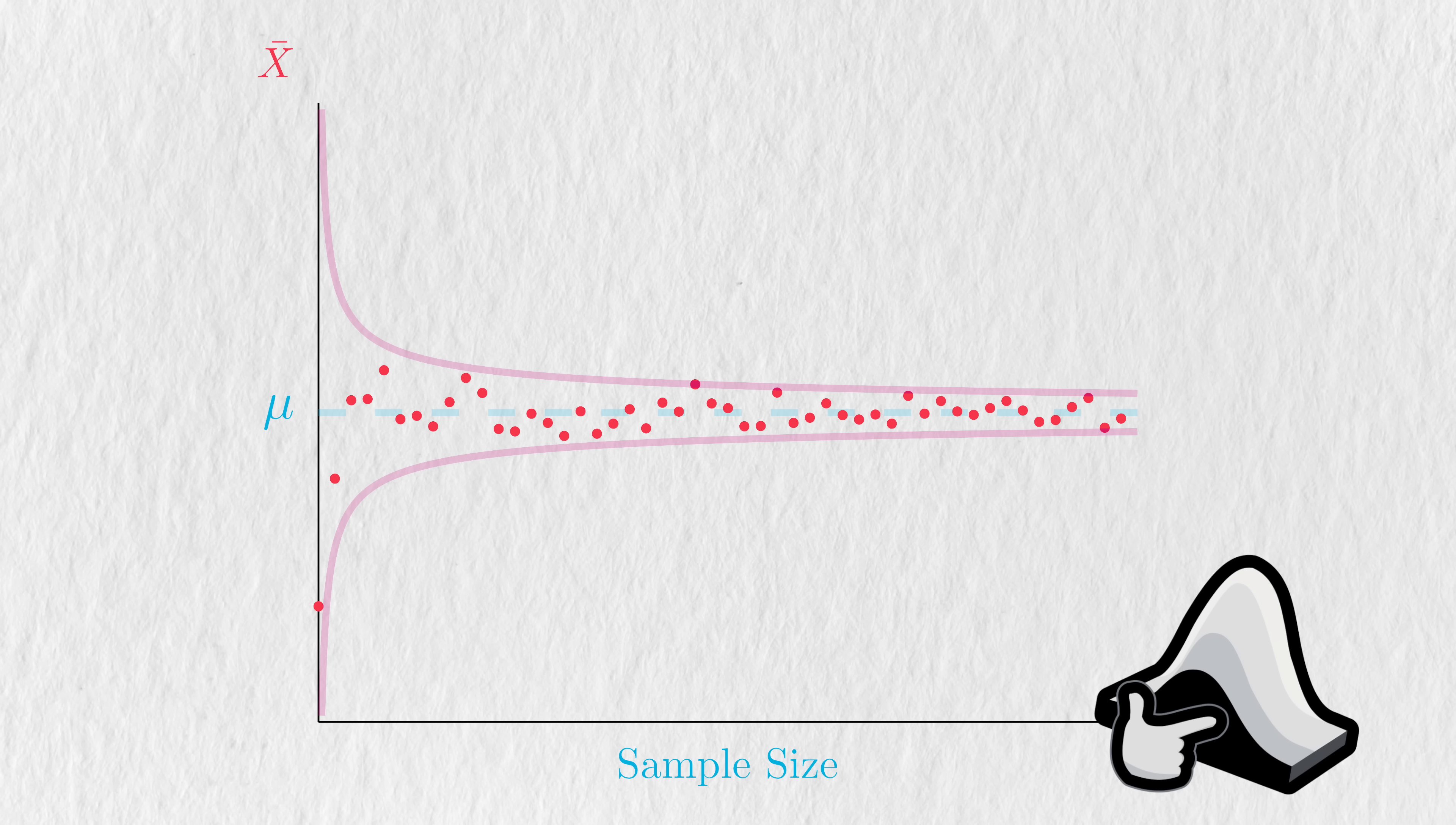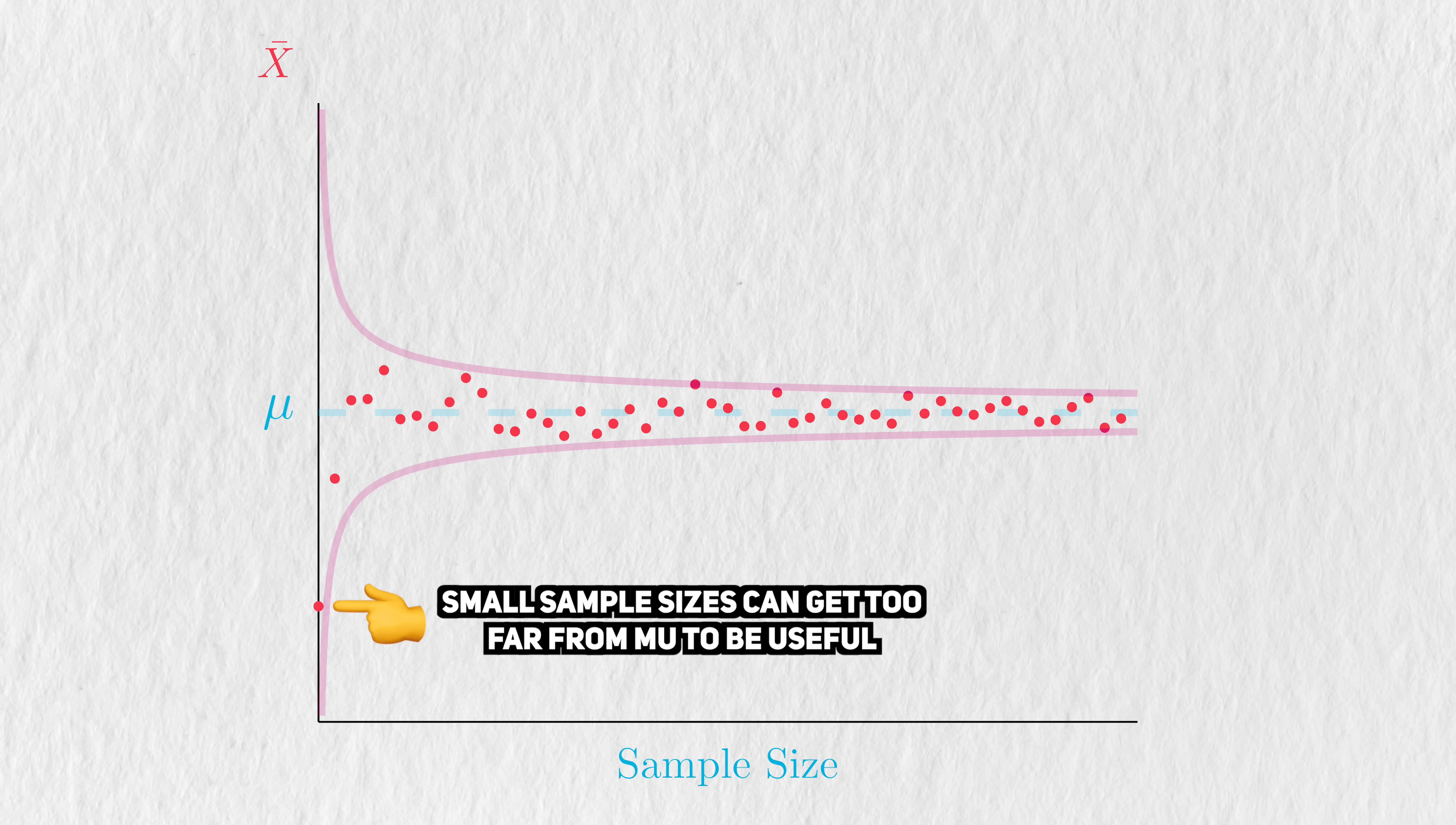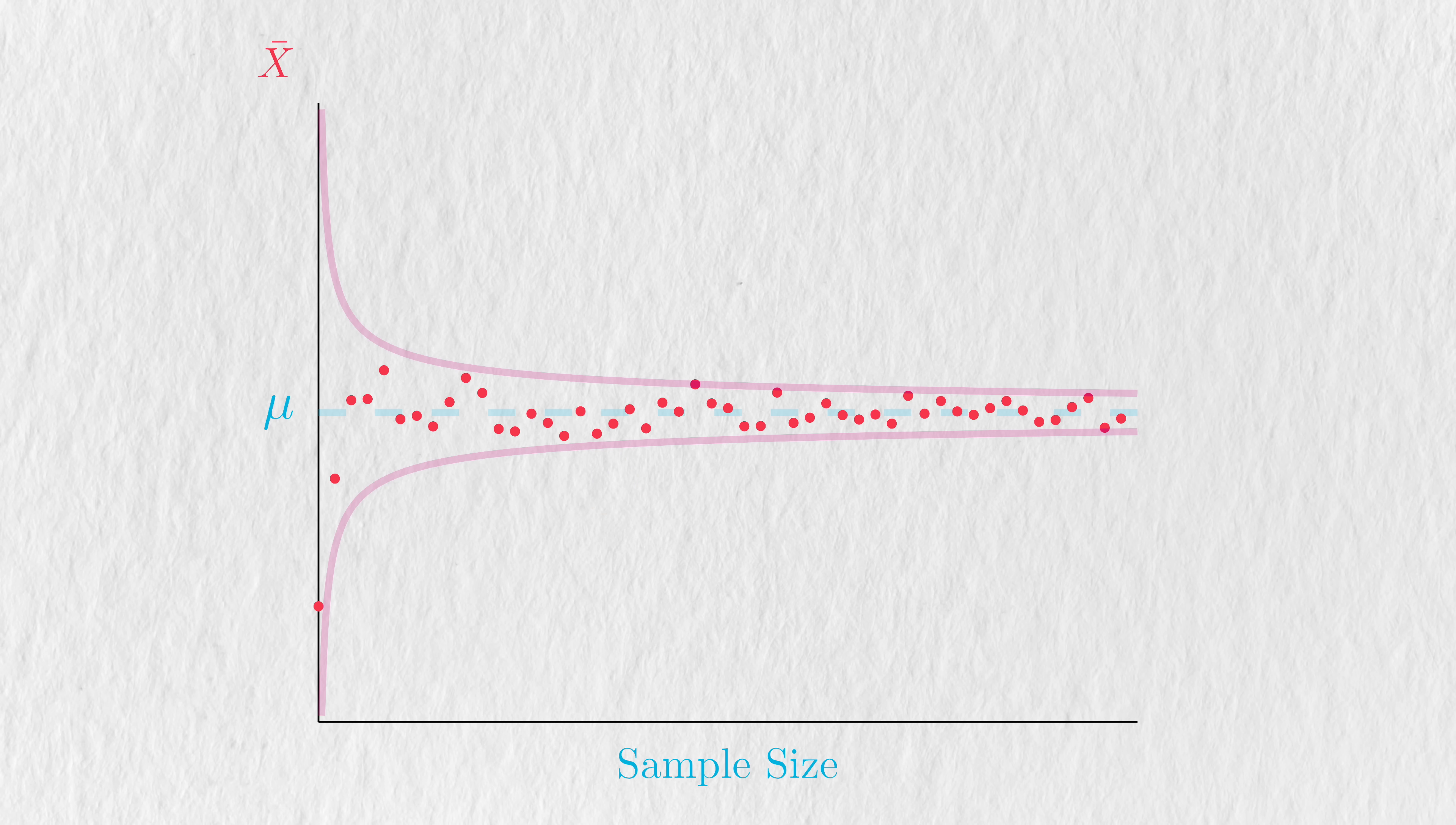We might have caught on that collecting infinite data is an impossible task. For real-life experiments to work, we have to draw realistic lines somewhere. Notice that the sample means with very small sample sizes can be very far from mu. But even for moderate sample sizes, we can get fairly close.